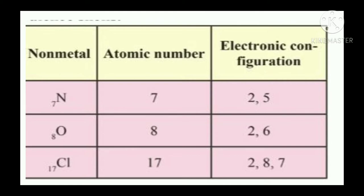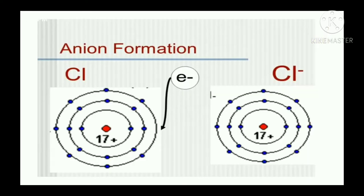If you observe nonmetals, there are 4 to 7 electrons in their valence shell. The next property is anion formation, or ion formation. Nonmetals have a tendency to accept electrons in their valence shell to form negatively charged ions called anions.